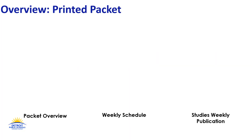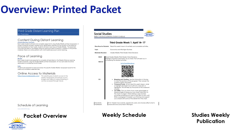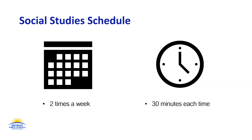Let's do an overview of the social studies materials that you've received. First, you'll find your packet overview, then your weekly schedule and your Studies Weekly publications. Here's your schedule for social studies — you'll do social studies two times out of the week for 30 minutes each time.